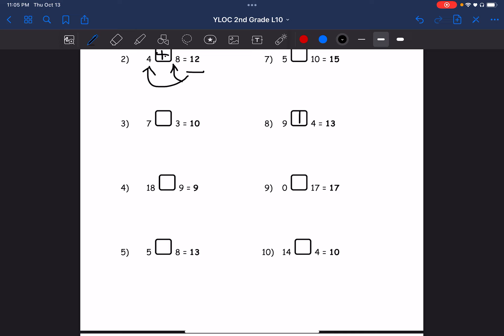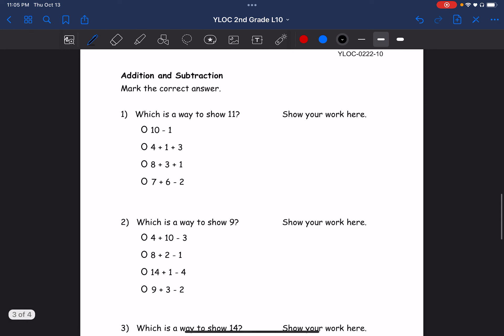Mark the correct answer. What is a way to show 11? Alright, that's interesting. So 10 minus 1, that actually equals 9, so that's not the answer. And then we see 4 plus 1 plus 3. Let's just do it in small steps: 4 plus 1, that's 5, and then plus 3, that's 8, so that's not 11.